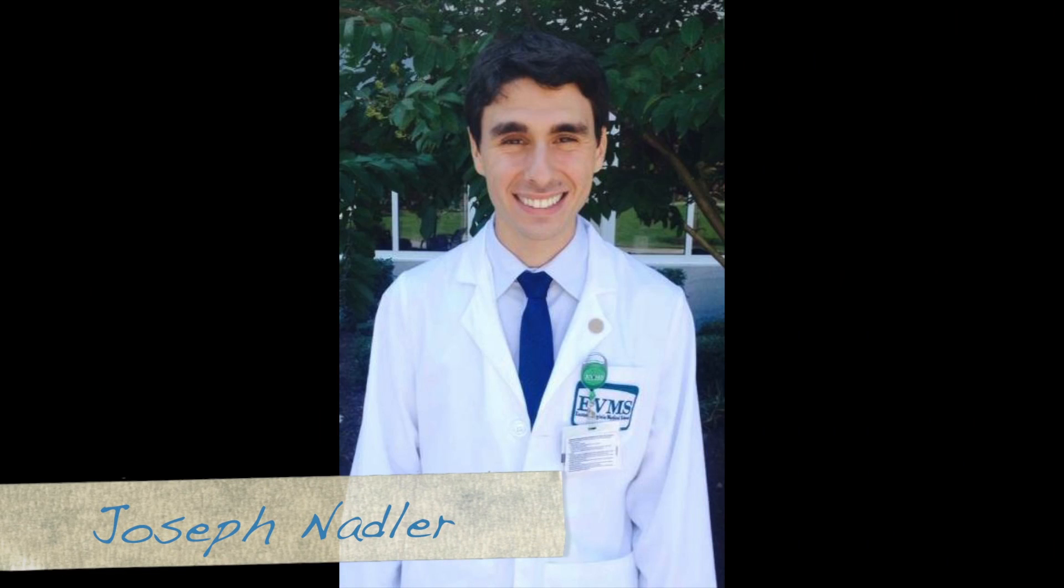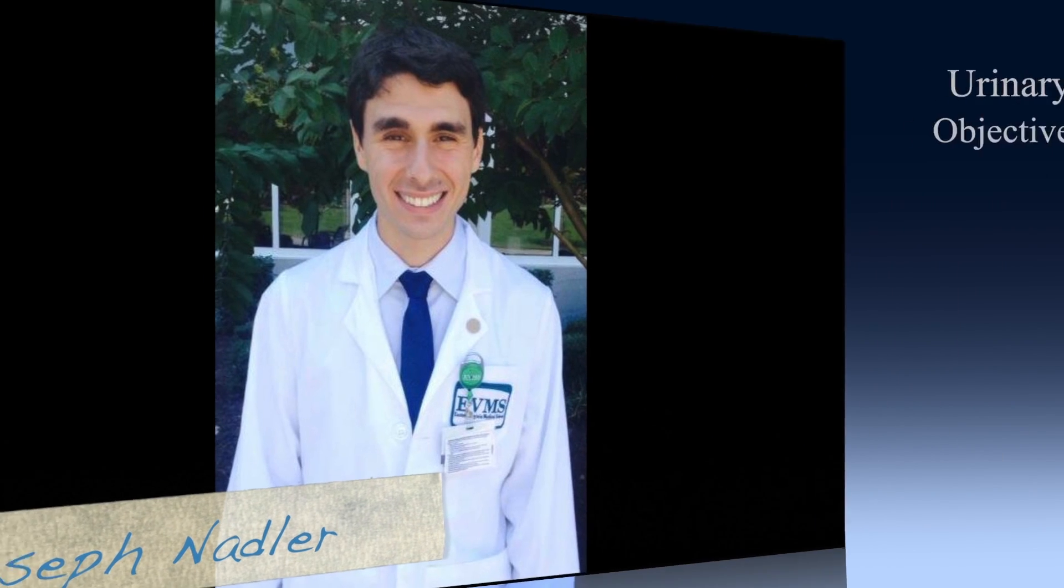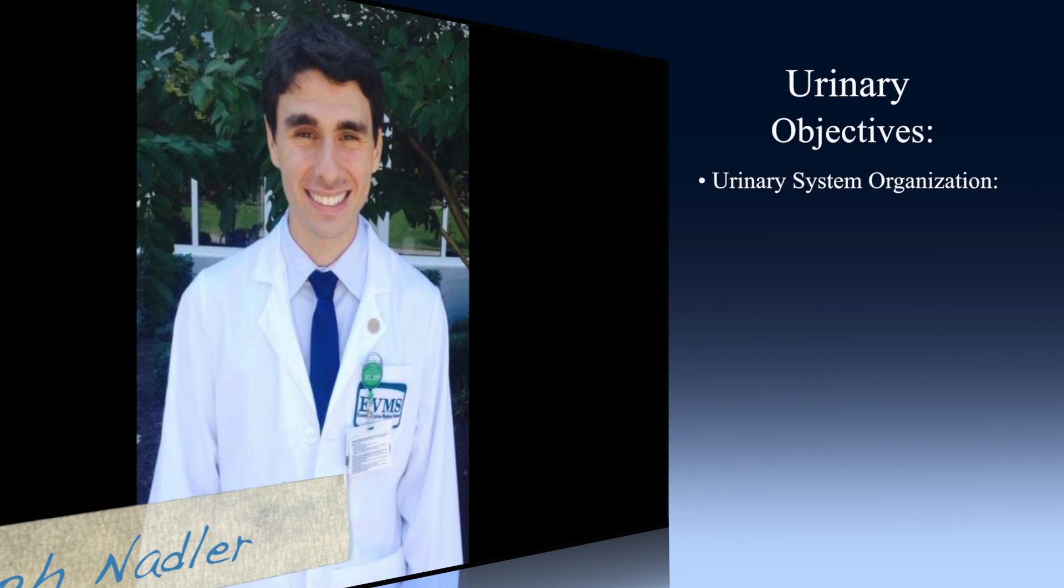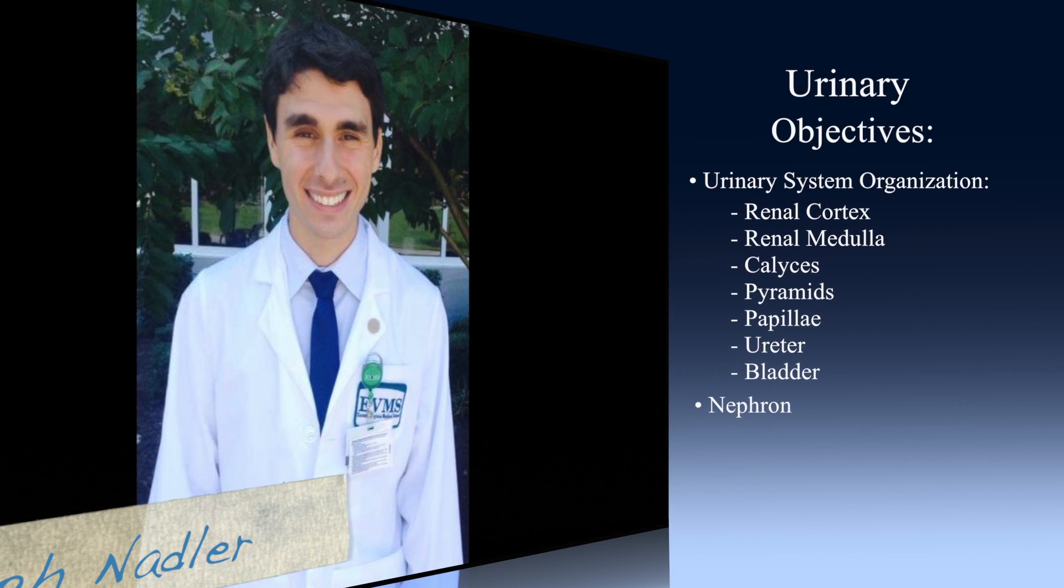The objectives for today are to understand the organization of the urinary system, including the functions of the various parts, demonstrate an ability to recognize, physiologically, the renal cortex, medulla, calyces, pyramids, and renal papillae, ureter, and bladder. And by the end of today, you should have an understanding of the nephron, juxtaglomerular cells, and mesangial cells.